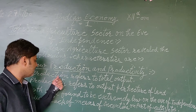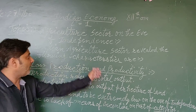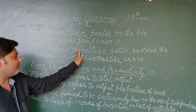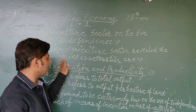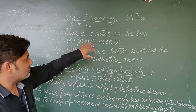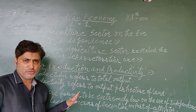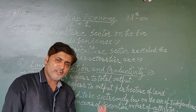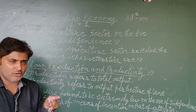Today we have discussed low productivity and low production as a characteristic of agriculture. If there are no problems, we will discuss the second and third characteristics next. Thank you.